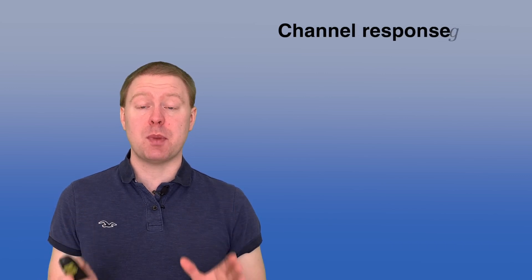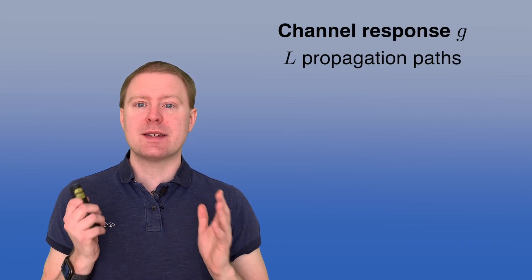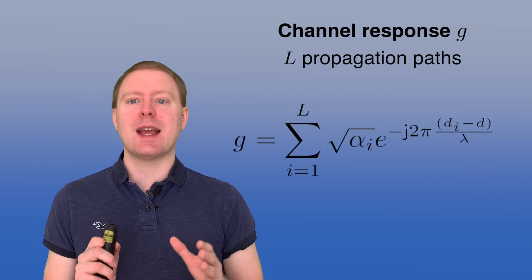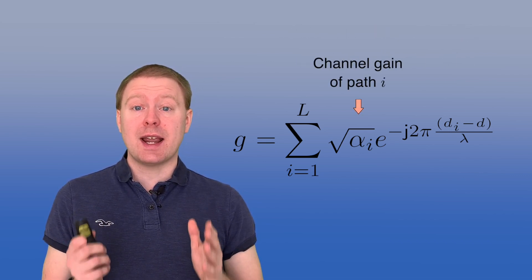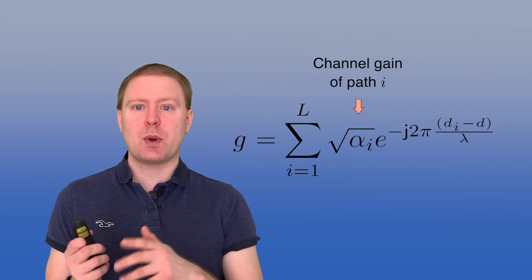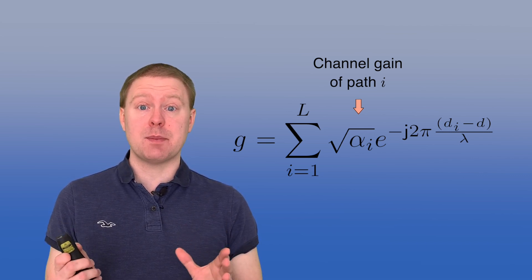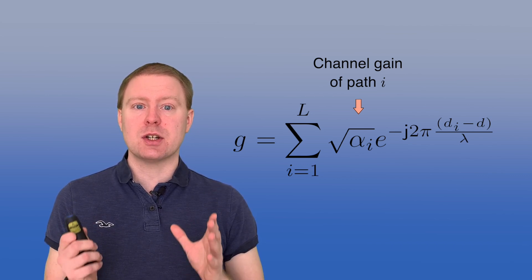Let's look at the channel response between the transmitter and the receiver. There are L paths, so we get the sum over these paths. And each of the paths can be described roughly as the line of sight case that we considered in the previous video. So we have a channel gain, alpha i, and we take the square root of that one. Alpha i is not computed as in the line of sight case, but it still describes the channel gain of the i-th propagation path.